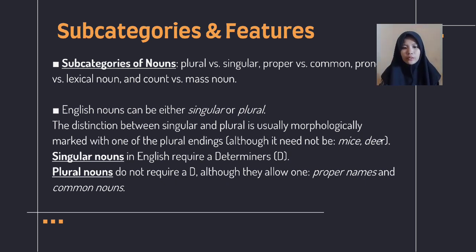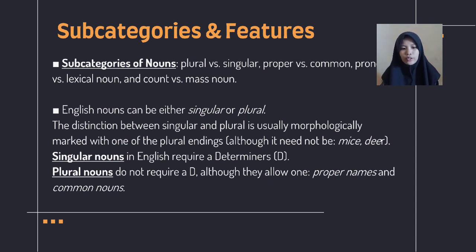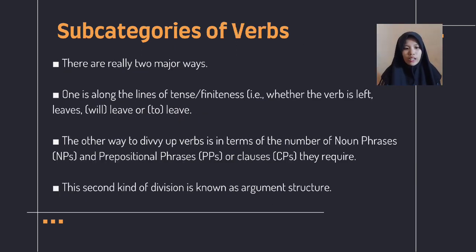Subcategories and features. Subcategories of nouns include: plural versus singular, proper versus common, pronoun versus lexical noun, and count versus mass noun. English nouns can be either singular or plural — the distinction is usually morphological, marked with one of the plural endings, although it can be irregular as in 'mice' or 'deer.' Singular nouns in English require a determiner. Plural nouns do not require determiners, although they allow one. There are two major ways to subcategorize verbs: one is along the lines of tense — whether the verb is 'left,' 'leaves,' 'will leave,' or 'to leave.' The other is in terms of the number of noun phrases, prepositional phrases, or clauses that they require, known as argument structure.